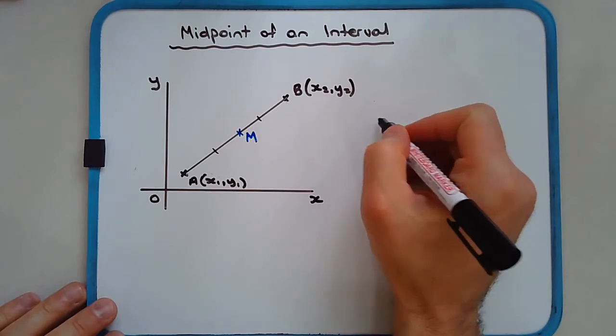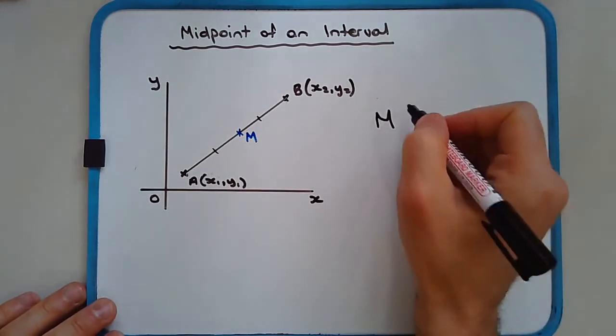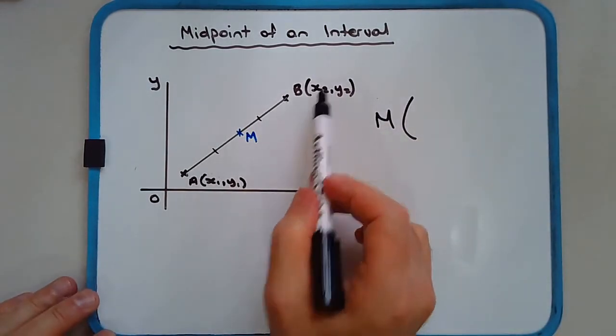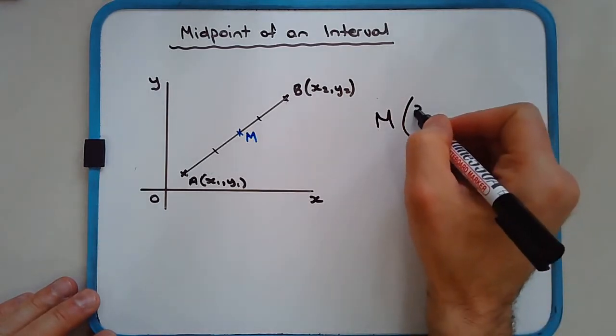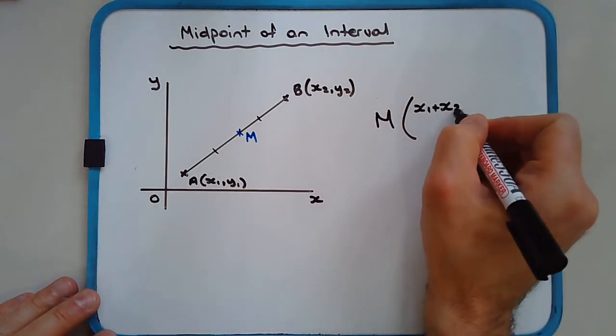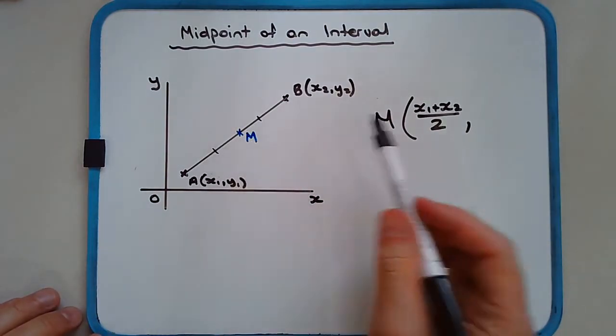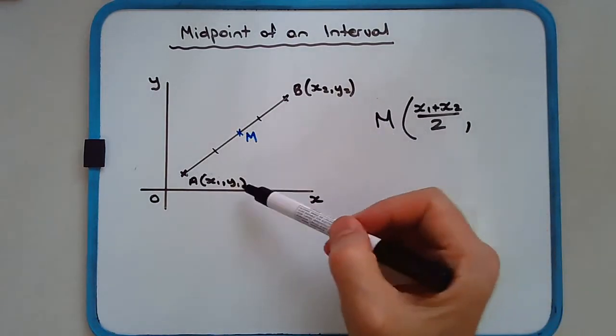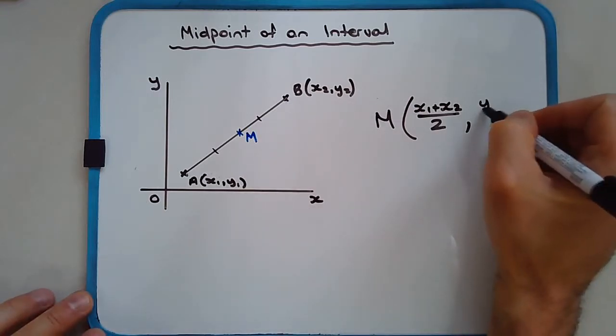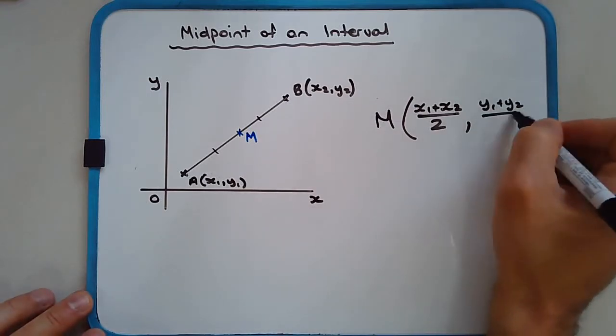So the coordinates of M are given by the mean of the x coordinates, so that's (x1 plus x2) over 2, and the y coordinate of M is a point that's in between y1 and y2, and we find that by taking the mean of the y coordinates.